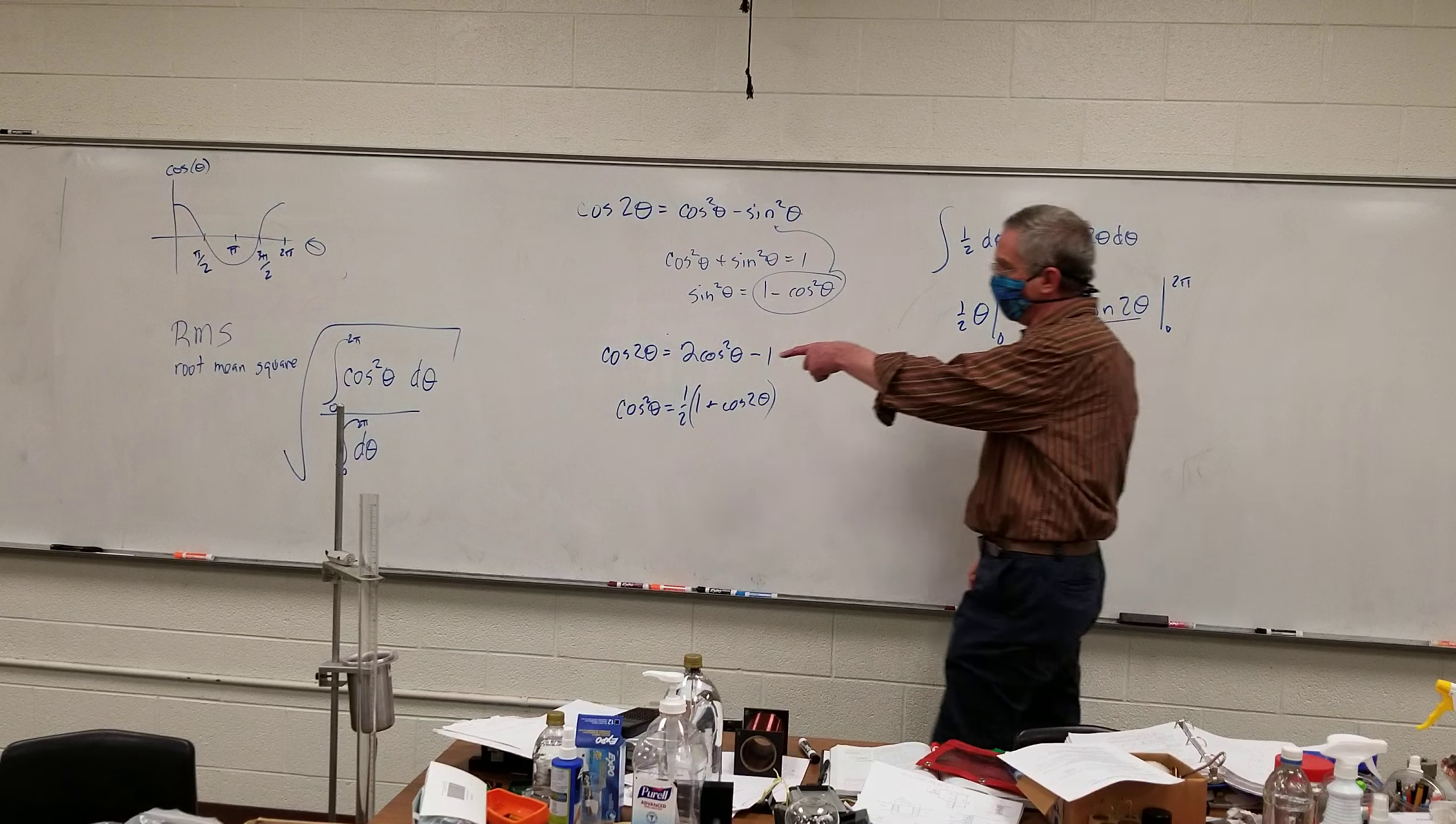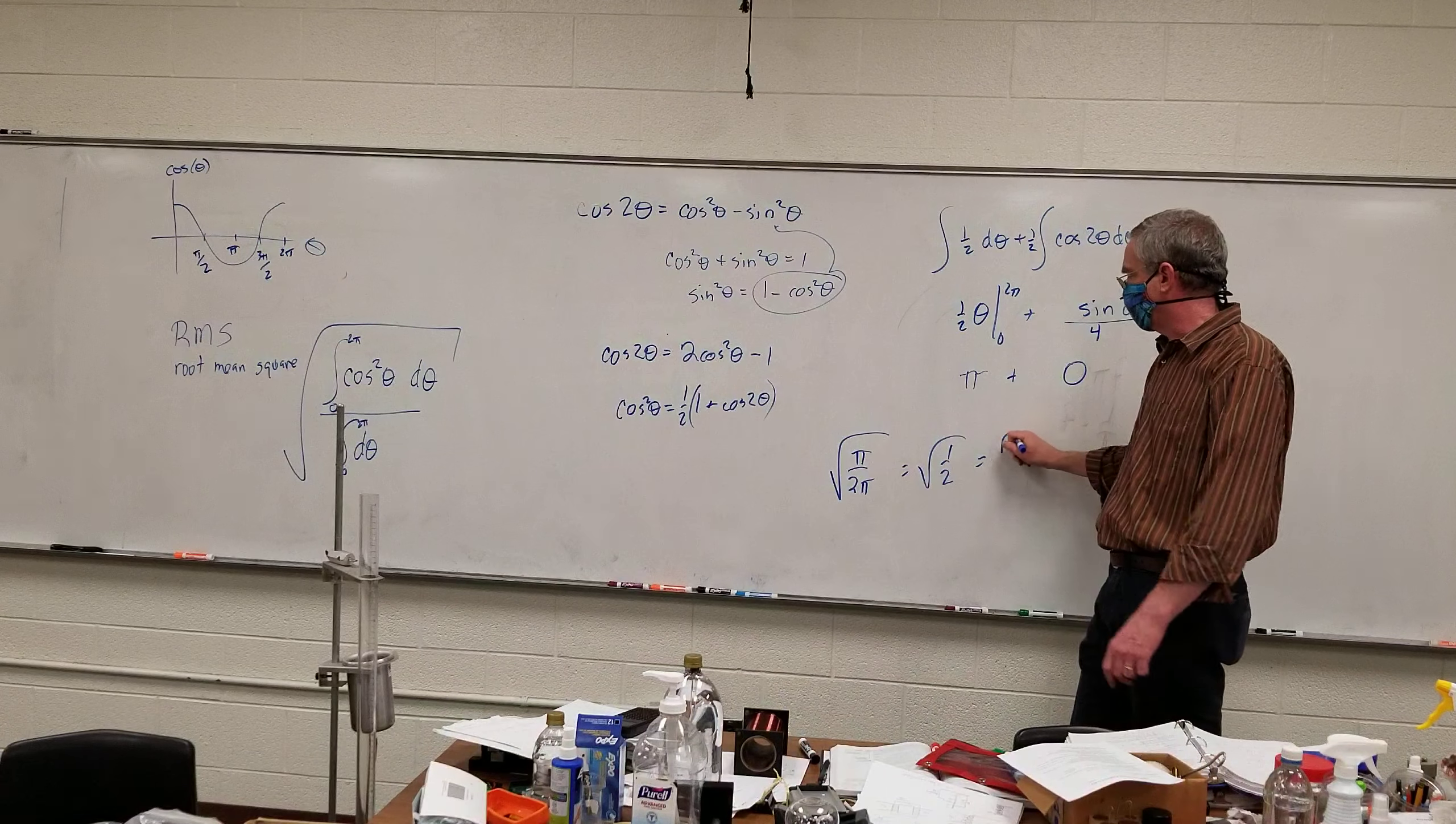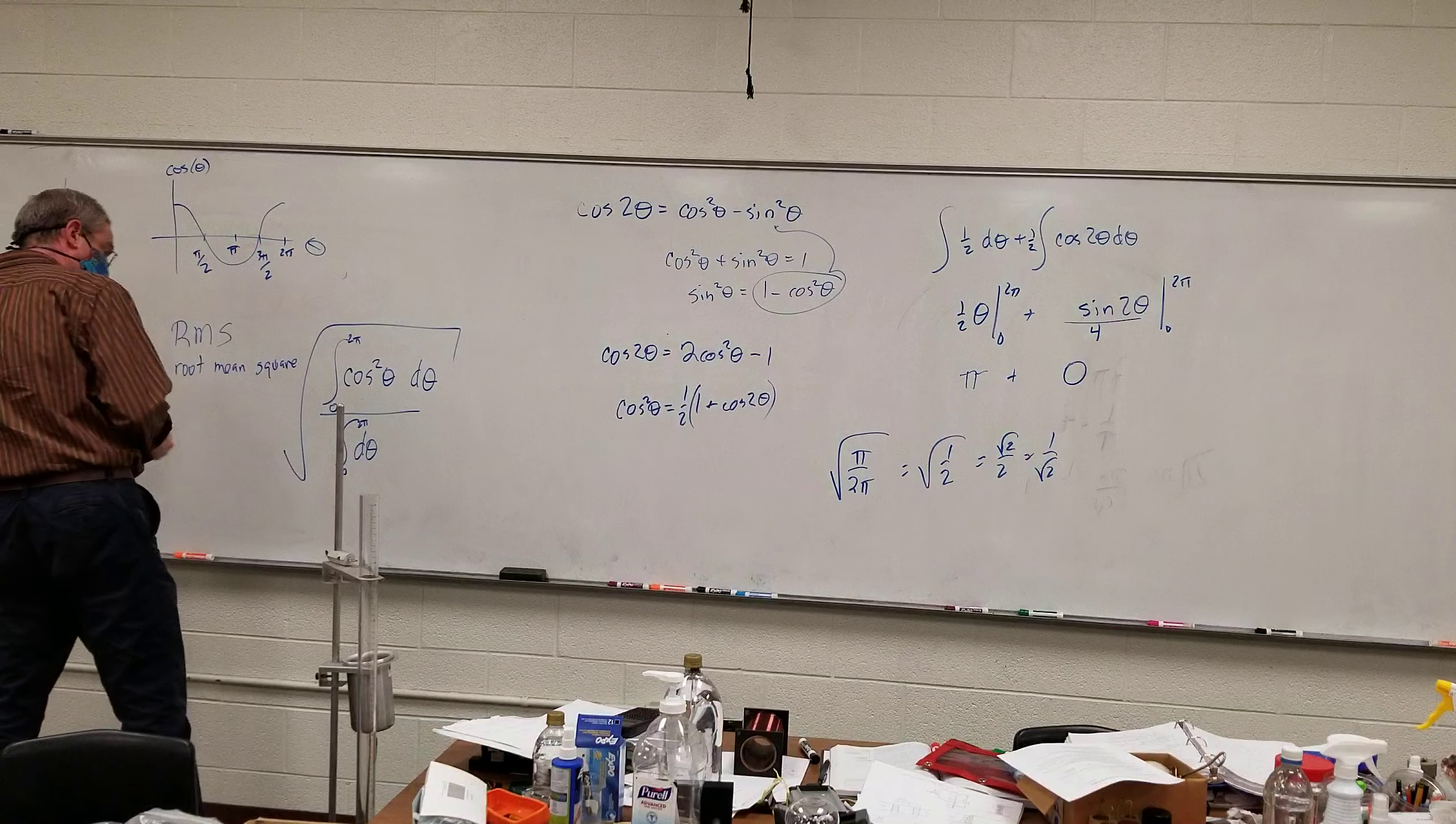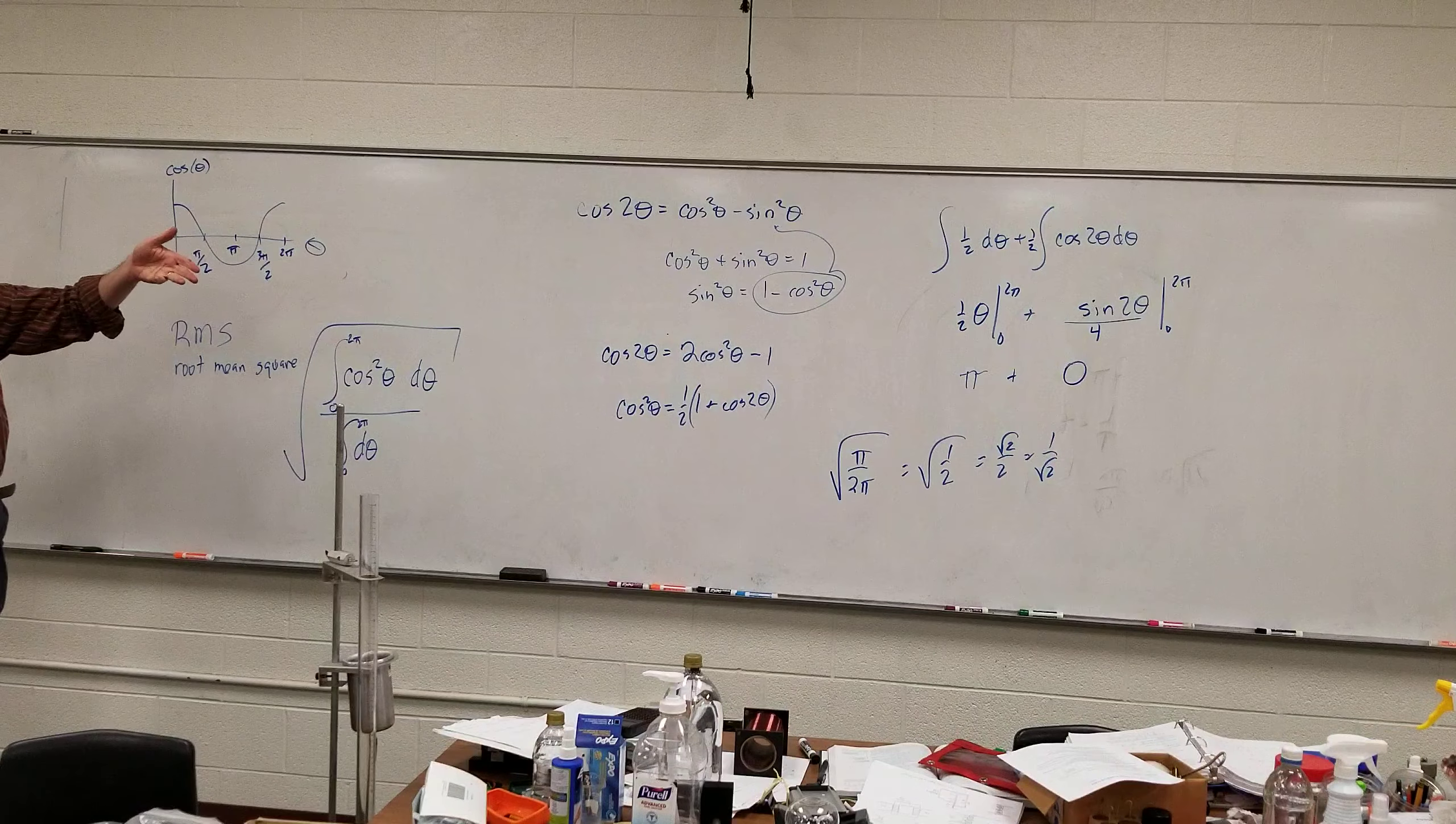So what we end up with here is the average value is the square root of pi over two pi, or the square root of one half, or the square root of two over two, or one over the square root of two, whichever really feels like the one you like. And so the RMS value is just the amplitude divided by square root of two.